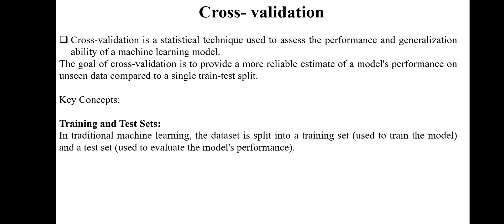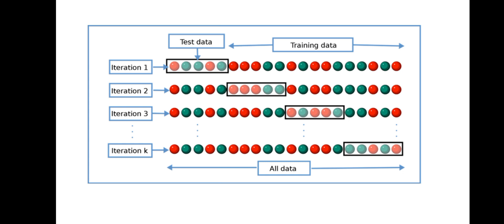Looking at this picture: after dividing the dataset into test and train, the test data is checked by iterations. It continuously checks small amounts of data — it divides the data and tests it individually for small amounts. For example, if we have two-color balls — red and green — I am training my model to only select the red balls.